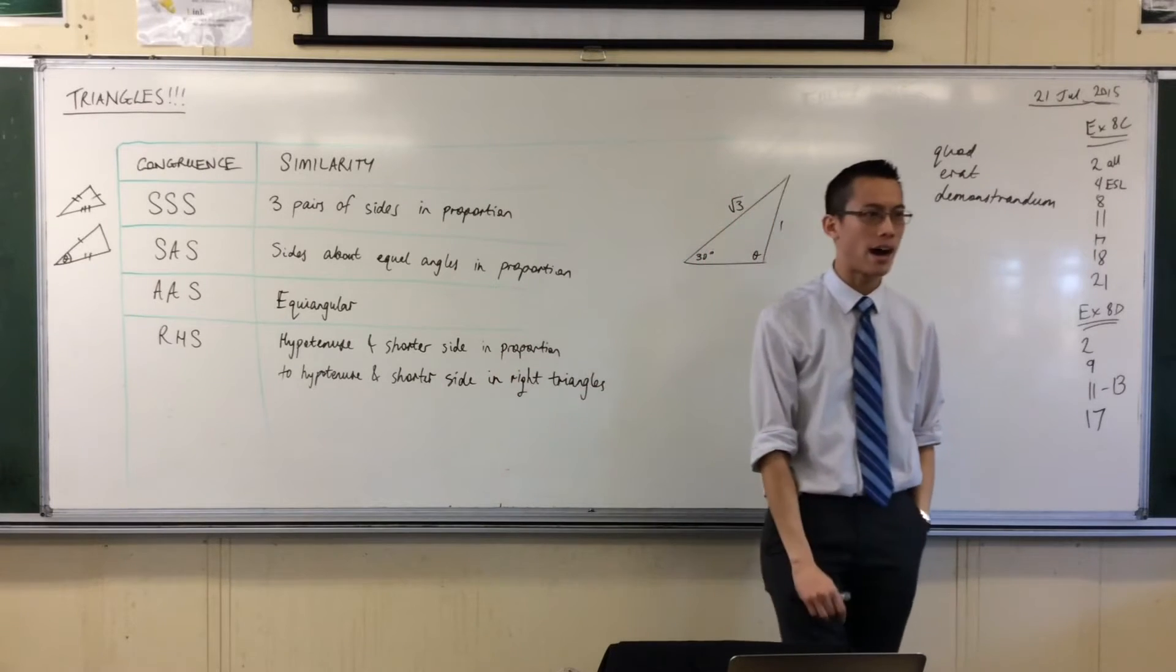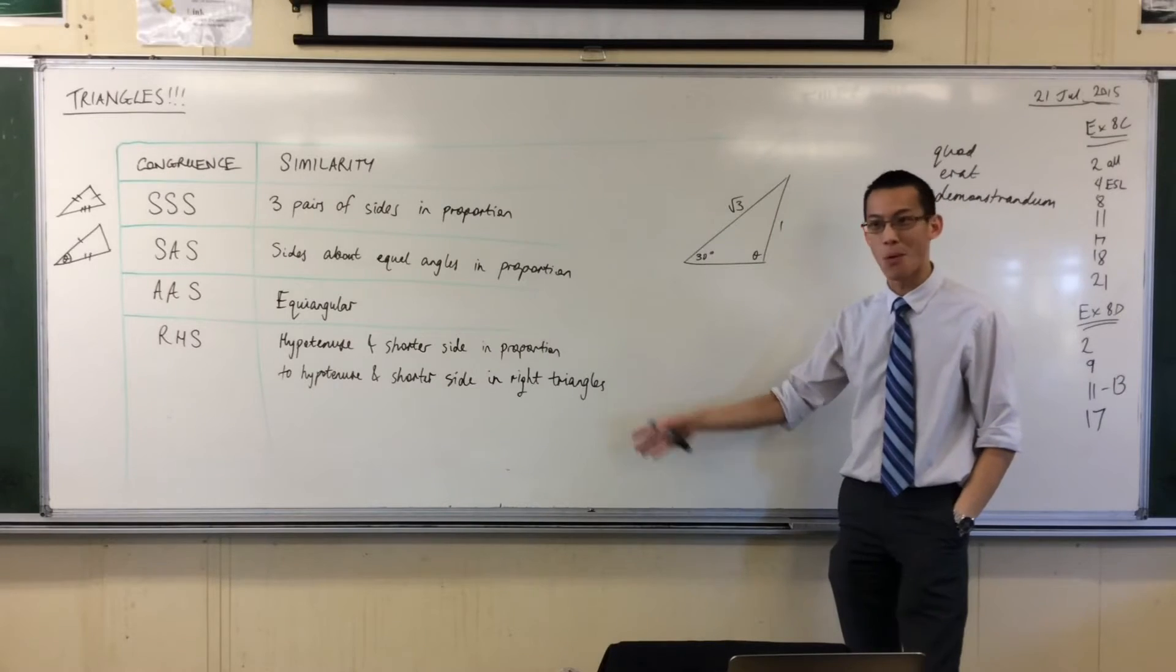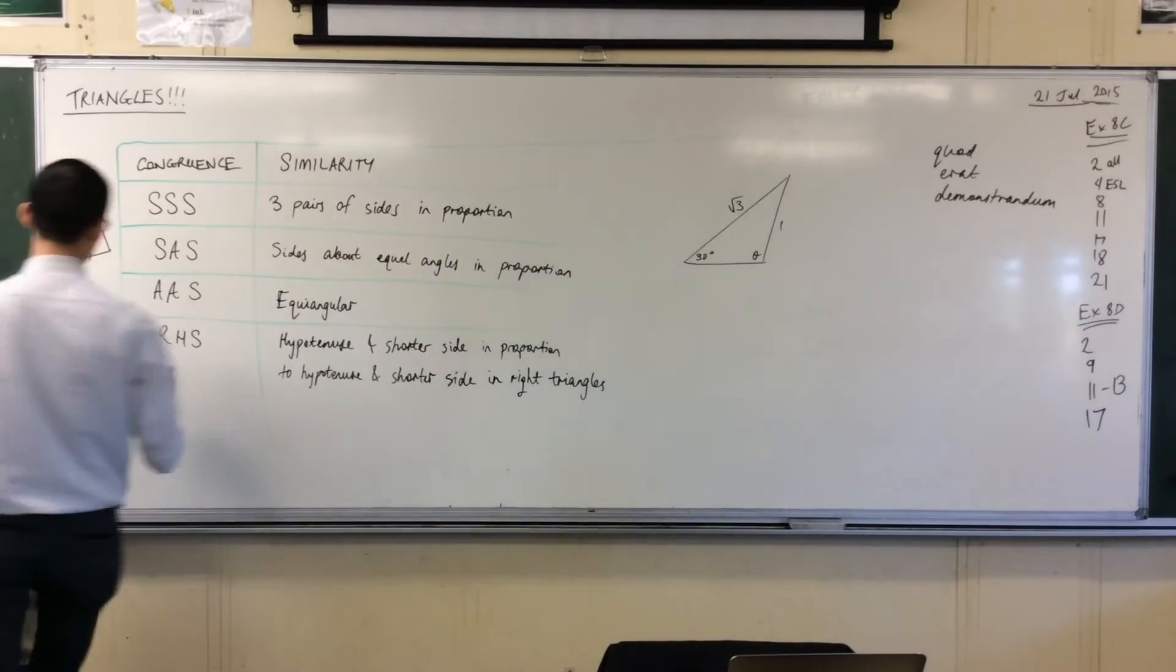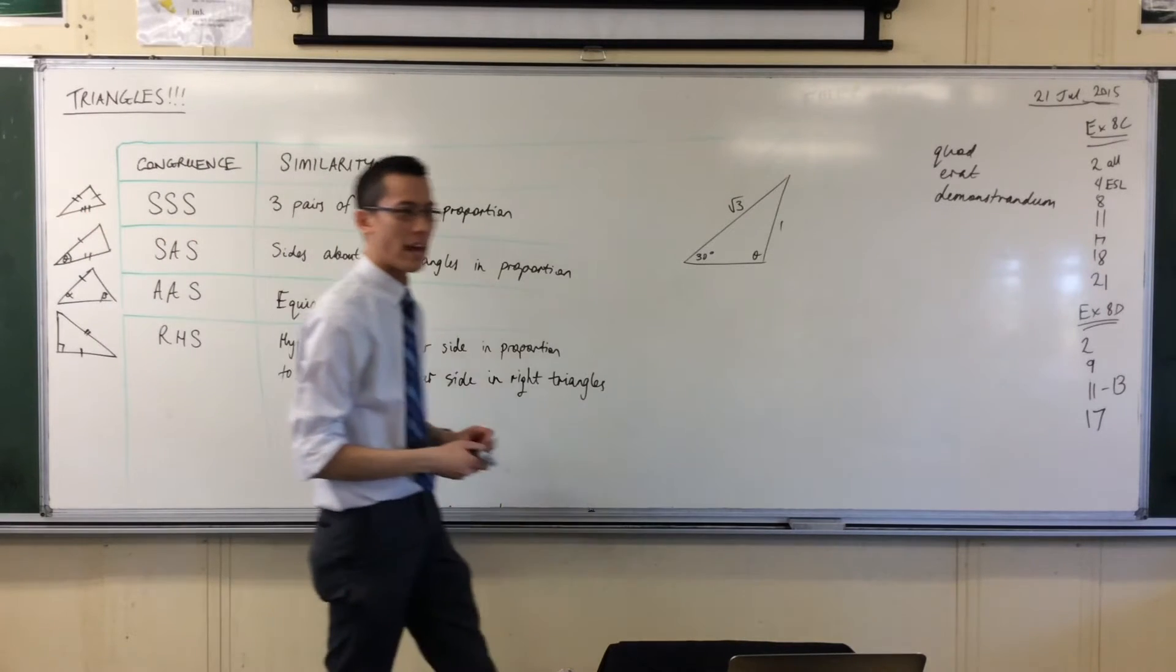And then there's this awkward RHS one down the bottom here. Now, there's a reason why he's the poor cousin of this whole lot, because if you have RHS, let's just quickly have a look at what this looks like. So AAS, it's like here's alpha, there's beta, and any of the sides is fine. Now what would this look like? So you've got a right-angled triangle, that's a given. And then you have the hypotenuse, that's the H, right-angle, hypotenuse, and then you have one of the other sides.